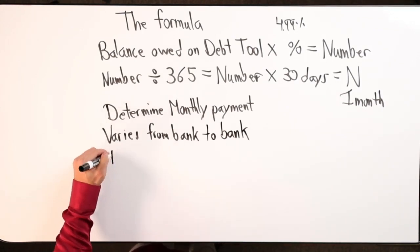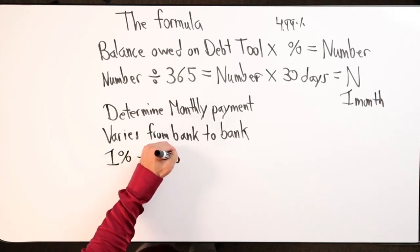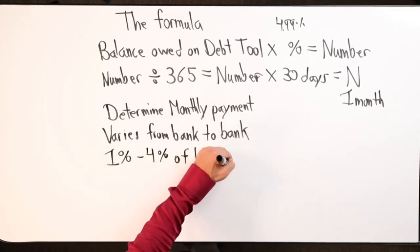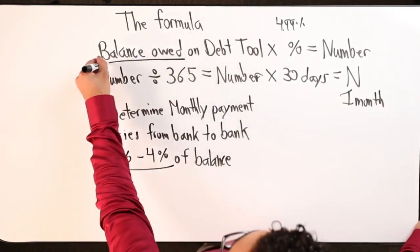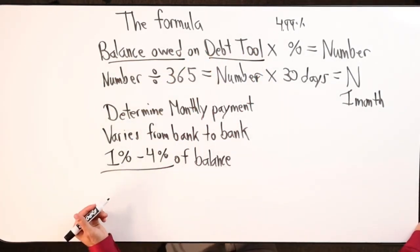I've seen as low as 1% of the balance to as high as 4% of the balance. When it comes to credit cards or personal line of credit, between 1% to 4% of the balance you owe on the debt tool will be your monthly minimum payment.